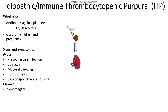For investigations, from the name we know there is thrombocytopenia, and symptoms suggest some degree of clotting issue. The first thing we want is a full blood count. The hallmark of ITP is an isolated thrombocytopenia — meaning hemoglobin and white cell counts should not be affected. This helps differentiate ITP from leukemia, where we often see a raised white cell count and low hemoglobin due to bone marrow infiltration, whereas in ITP only the platelets are involved.